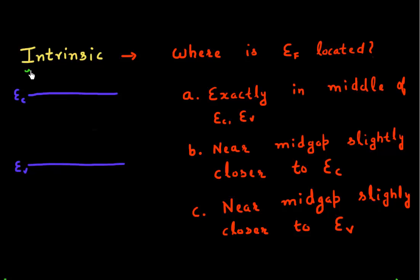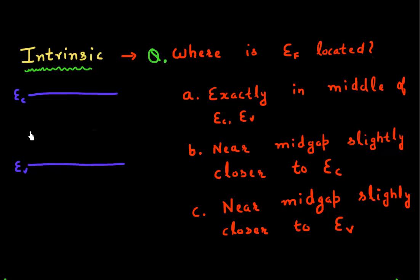Let's continue our discussion of intrinsic semiconductors. I've been asked: where is the Fermi level located inside an intrinsic semiconductor? Let me draw the Fermi level inside the intrinsic semiconductor using the color yellow. This dotted line represents the Fermi level, and I'll give it the subscript i — so this Ei is the Fermi level inside the intrinsic semiconductor.